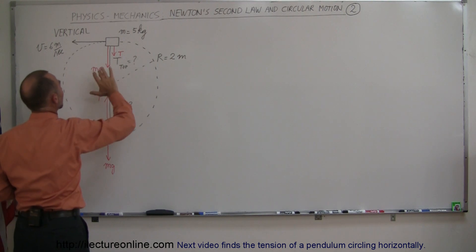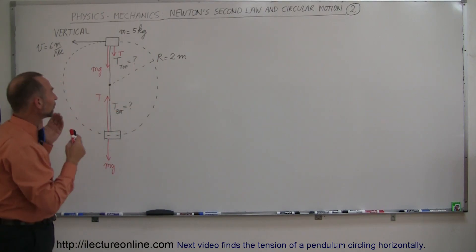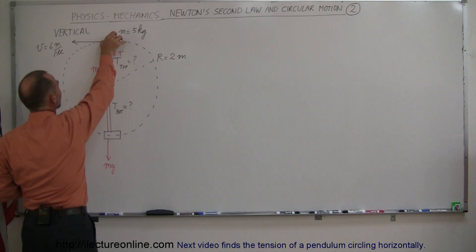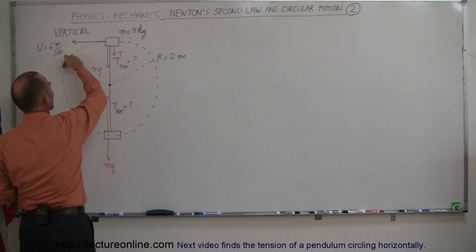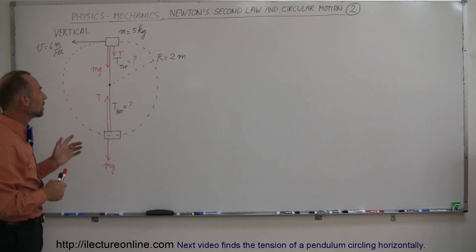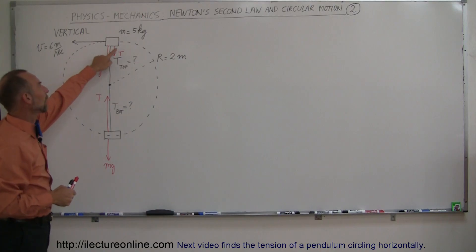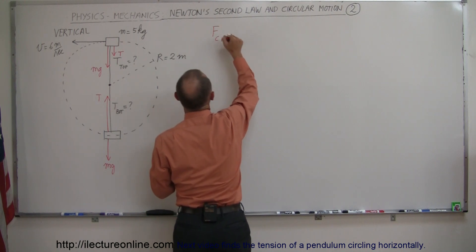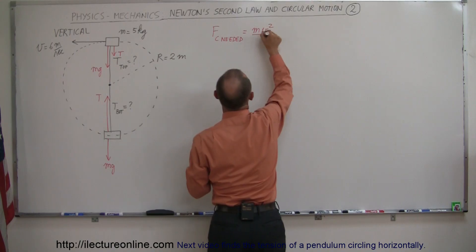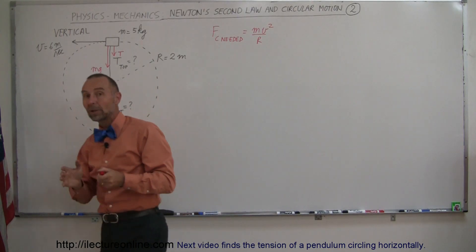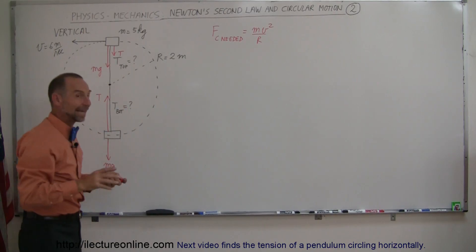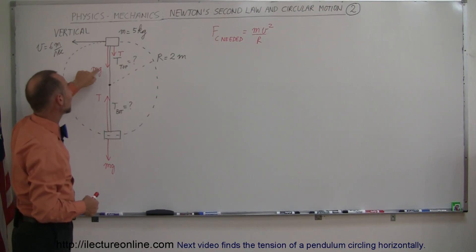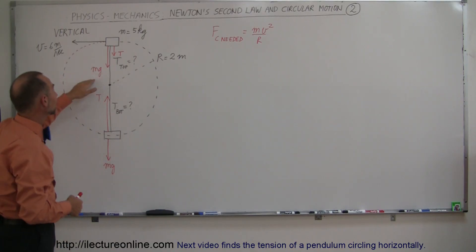If you look at the top portion, something seems strange — the only forces acting on the object are downward: the weight plus the tension in the string. You might expect it to come crashing down instead of going around in a circle. But that's not the case. What we can do is find out what centripetal force is required to make it go around in a circle, using F_C = Mv²/R. We can then check whether Mg alone is sufficient to provide that centripetal force, and if not, the tension must make up the deficit.